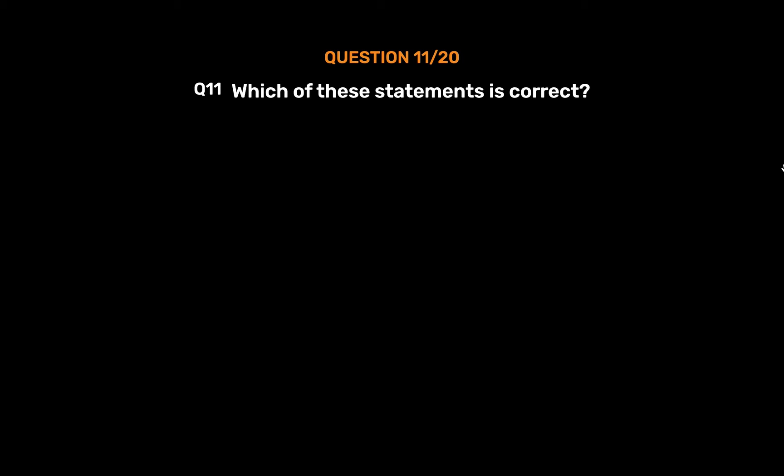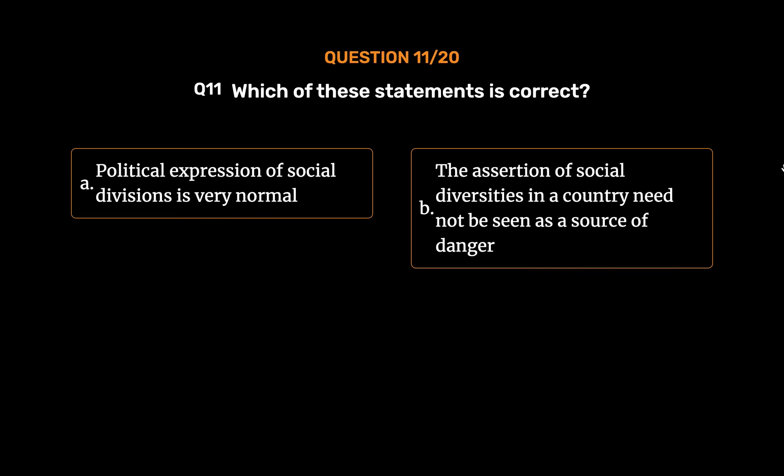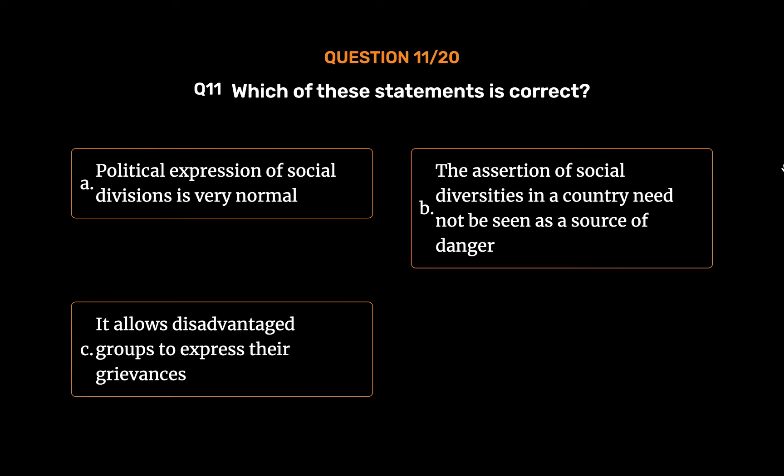Question number 11. Which of these statements is correct? Option A: Political expression of social divisions is very normal. Option B: The assertion of social diversities in a country need not be seen as a source of danger. Option C: It allows disadvantaged groups to express their grievances. Option D: All of them.